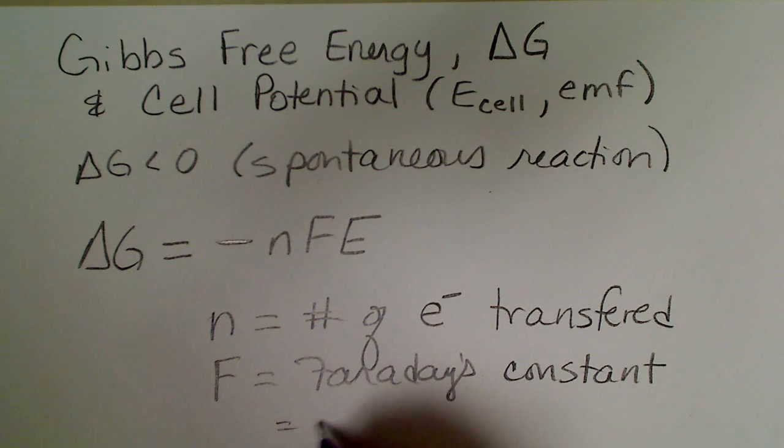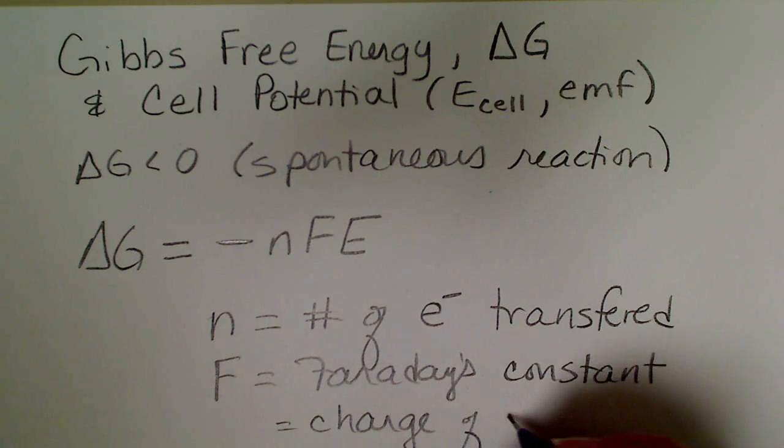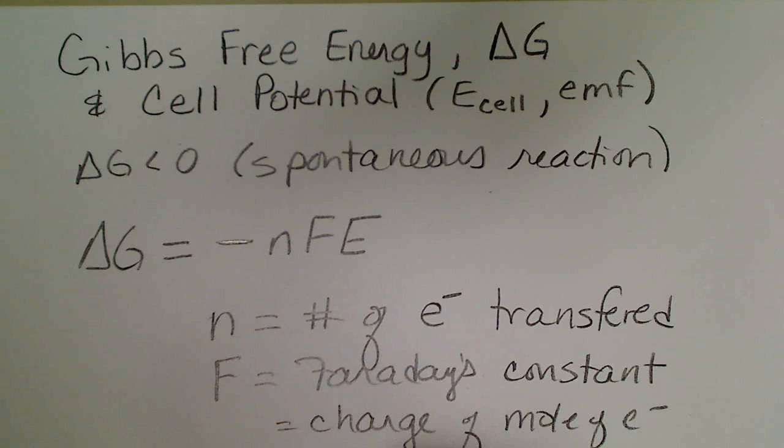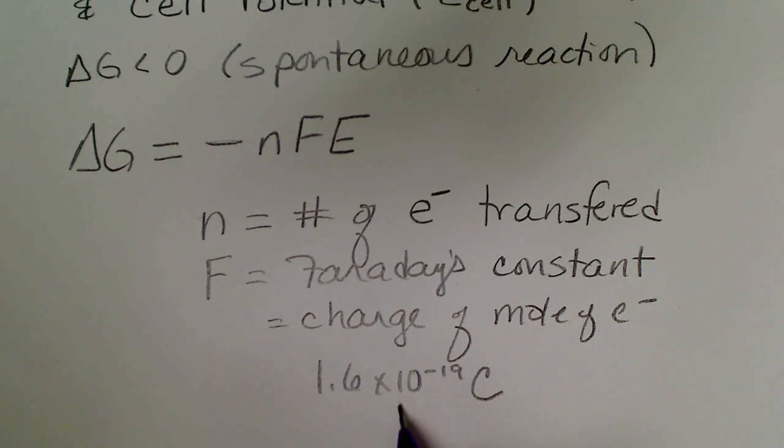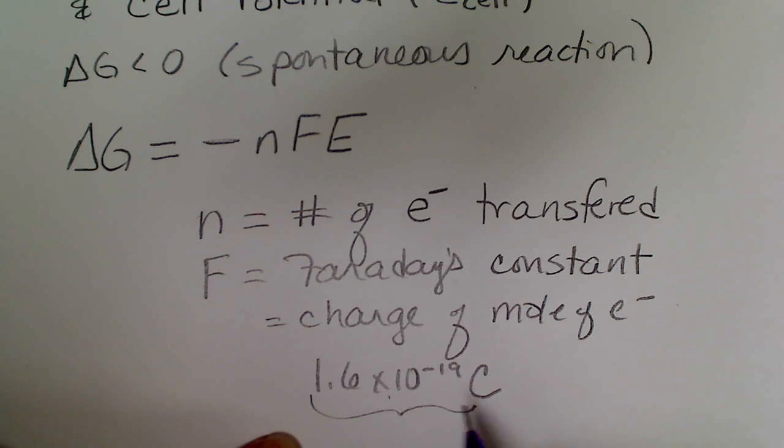F is Faraday's constant, and what that represents is the charge of one mole of electrons. So if we take the charge of one electron and multiply by a mole, then that is 1.6 times 10 to the minus 19 coulombs. This is a fundamental value, the charge of one electron.